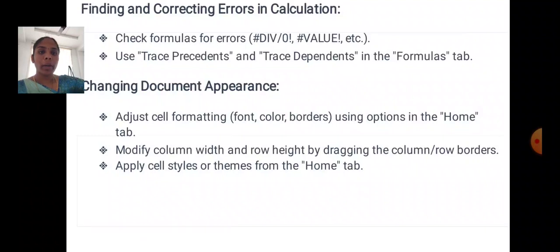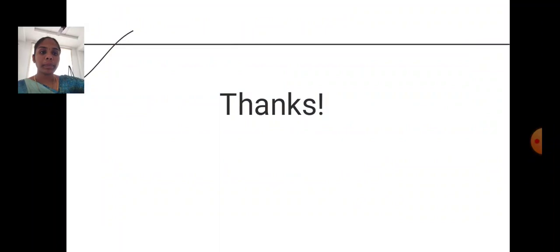Choosing document appearance: adjust cell formatting such as font, color, and border using options in the Home tab. Modify column width and row height by dragging column and row borders. Apply cell styles or themes from the Home tab. Thank you.